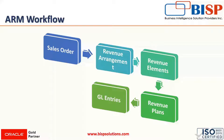A revenue arrangement is a non-posting transaction that records the details of customer performance obligations for the purpose of revenue allocation and recognition. ARM automatically creates a revenue arrangement from predefined revenue sources — that can be a sales order or invoices. Within the revenue arrangement, we can have another document called the revenue element, which corresponds to individual line items in a source, and each revenue element represents a separate performance obligation.